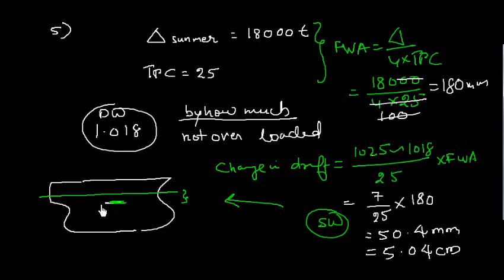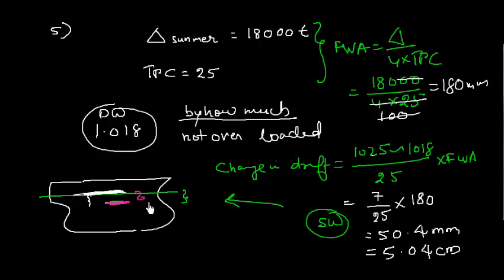So we can load the vessel up to this submerged level in dock water, so that when she goes to salt water the vessel will rise and the waterline will return to exactly the load line mark. This change in draft of 5.04 cm is the allowable immersion.